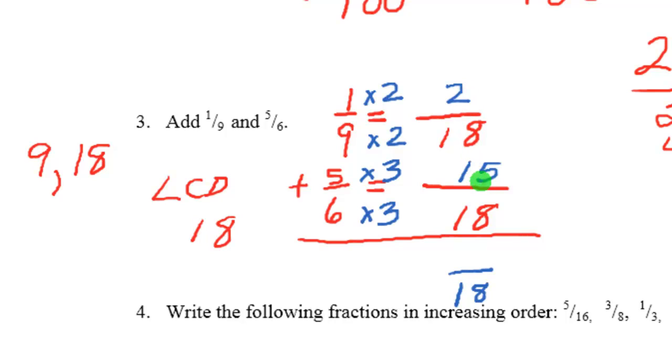Now you've got these changed with the common denominator. Keep that denominator, and you add the numerators, or the tops. So 2 plus 15, which is 17. This fraction doesn't reduce any further, and it's also proper. So we don't have to change to a mixed number. This is your final answer.